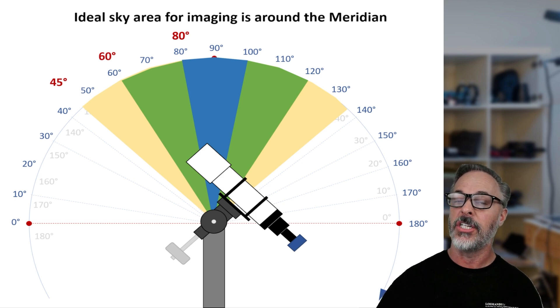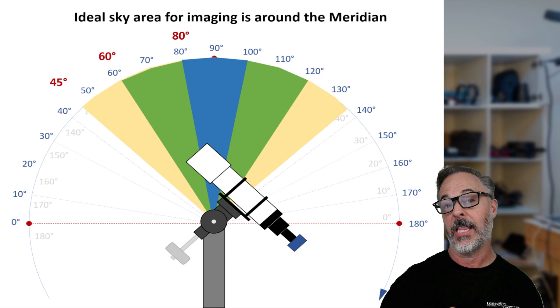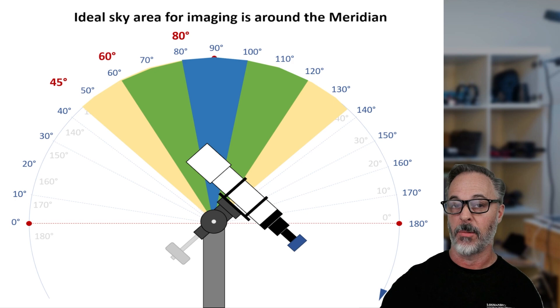Now in the ideal conditions, you would shoot your targets as they go through the zenith, but in reality, they're not all going to be going through the zenith, but they all will pass through the meridian at some point.